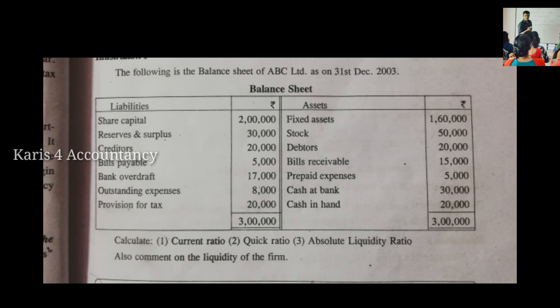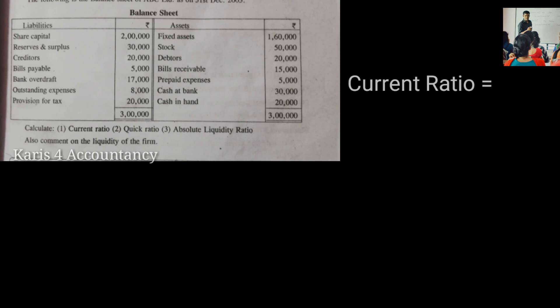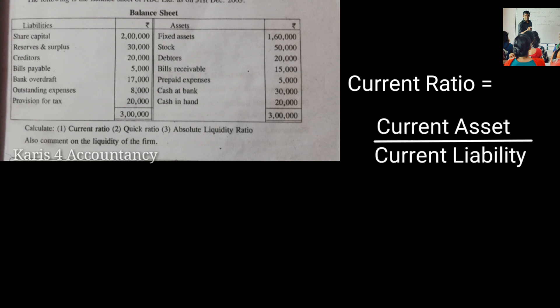Now let's calculate the Current Ratio — current assets divided by current liabilities. The current assets are: cash in hand, cash at bank, prepaid expense, bills receivable, debtors, and stock. These together form the current assets.